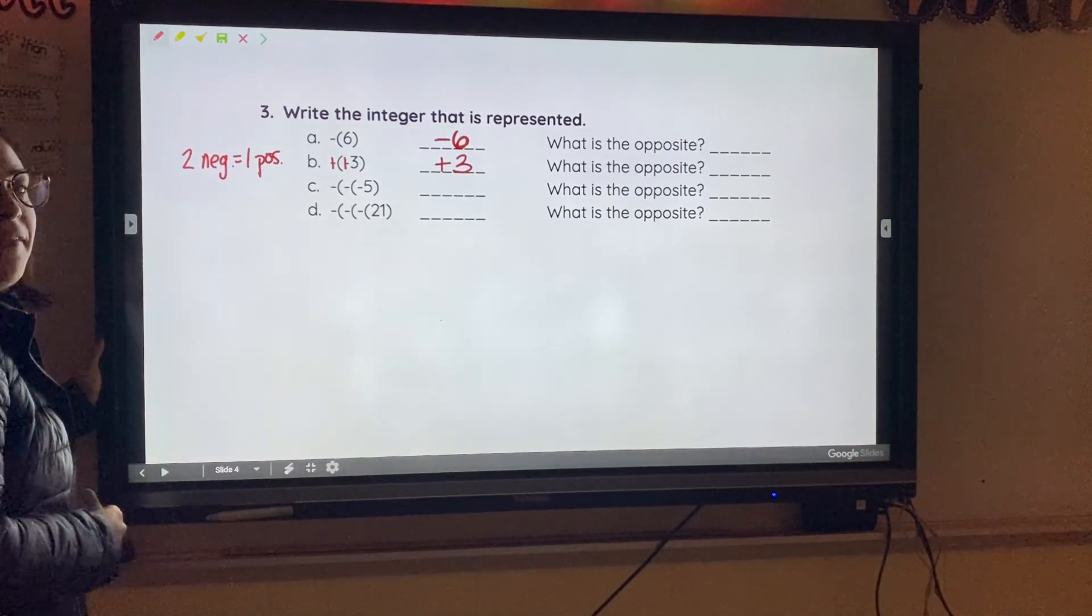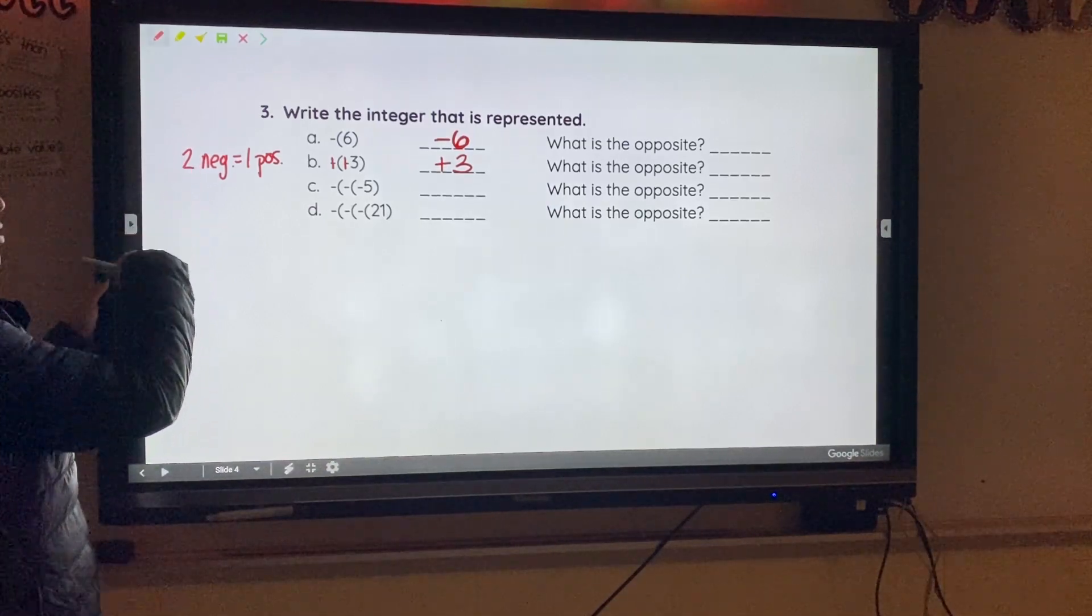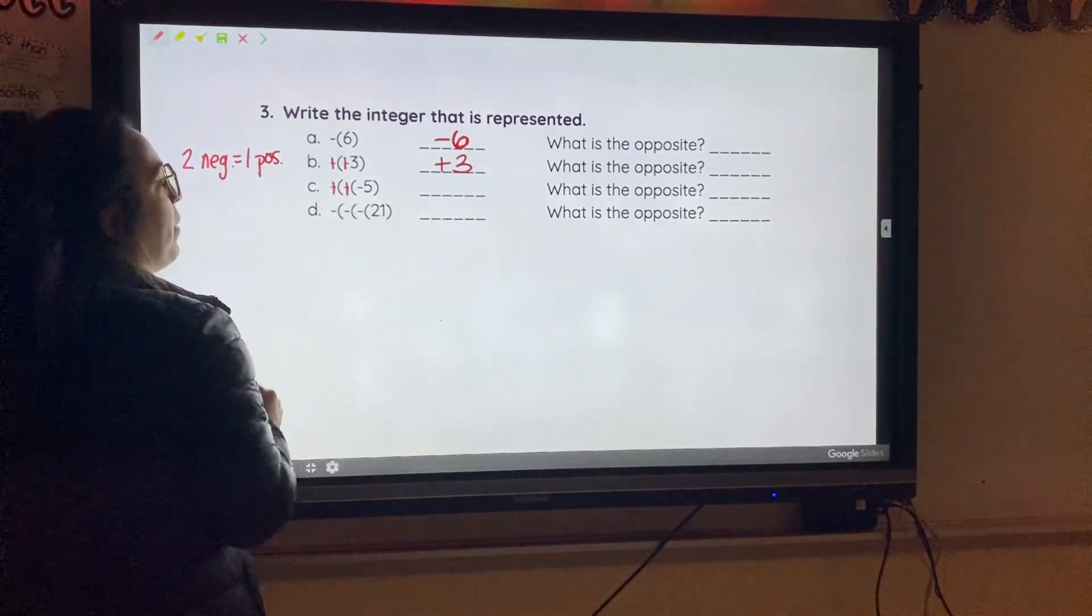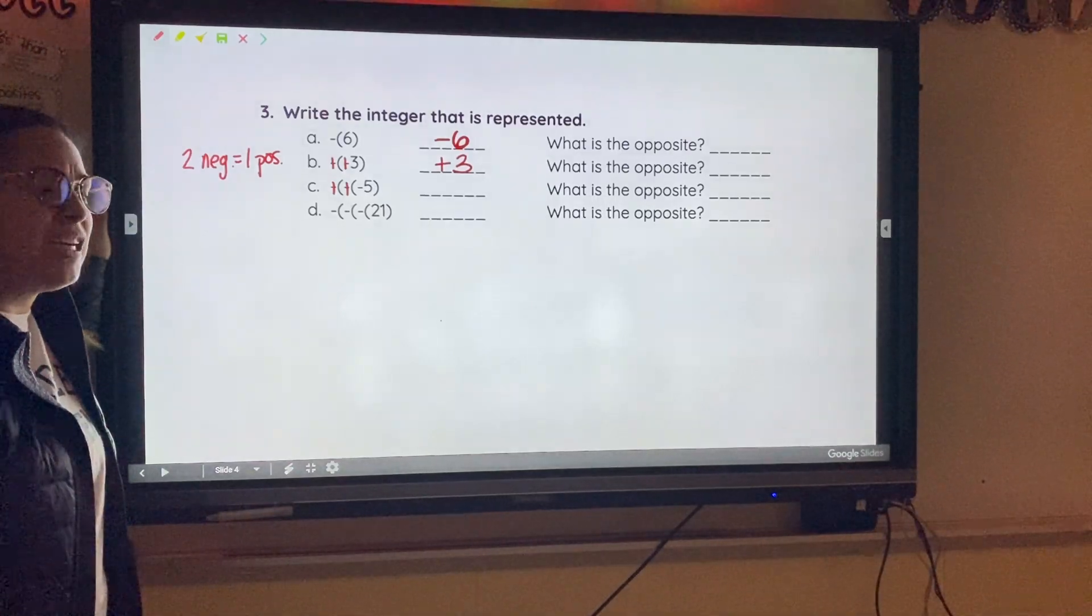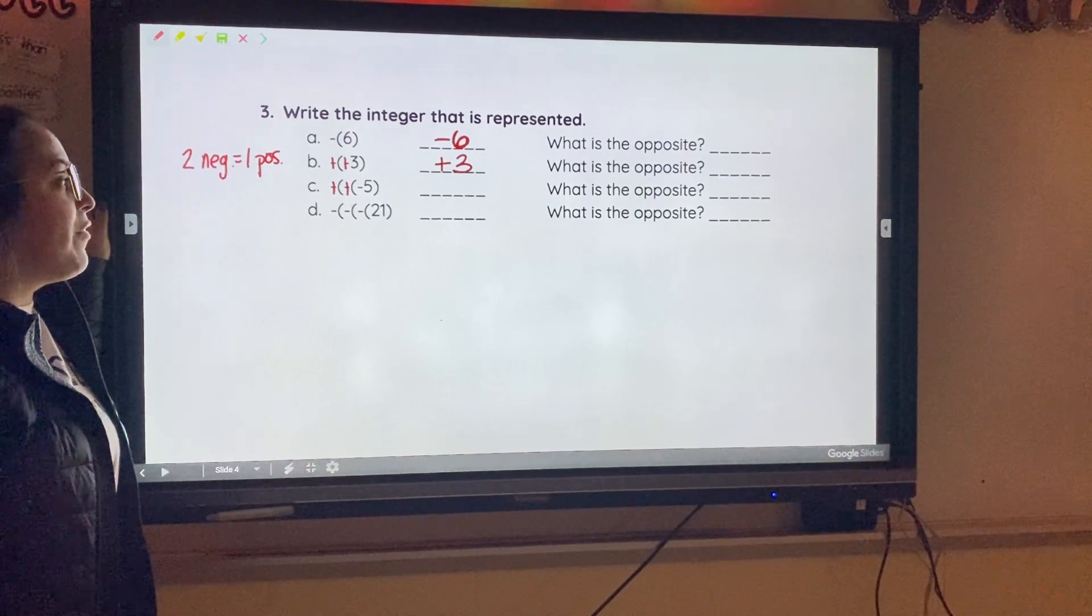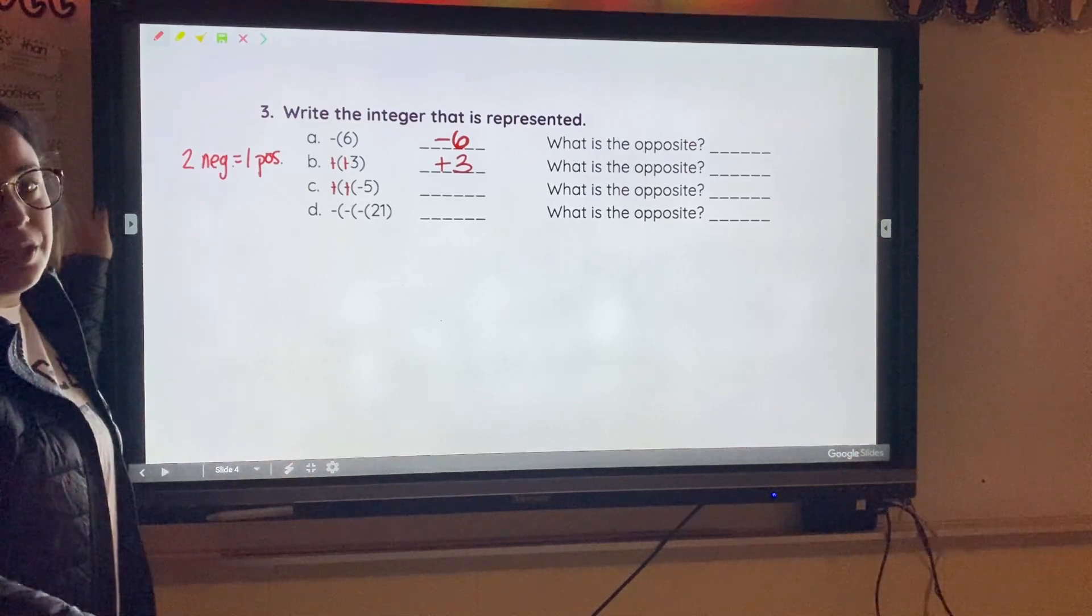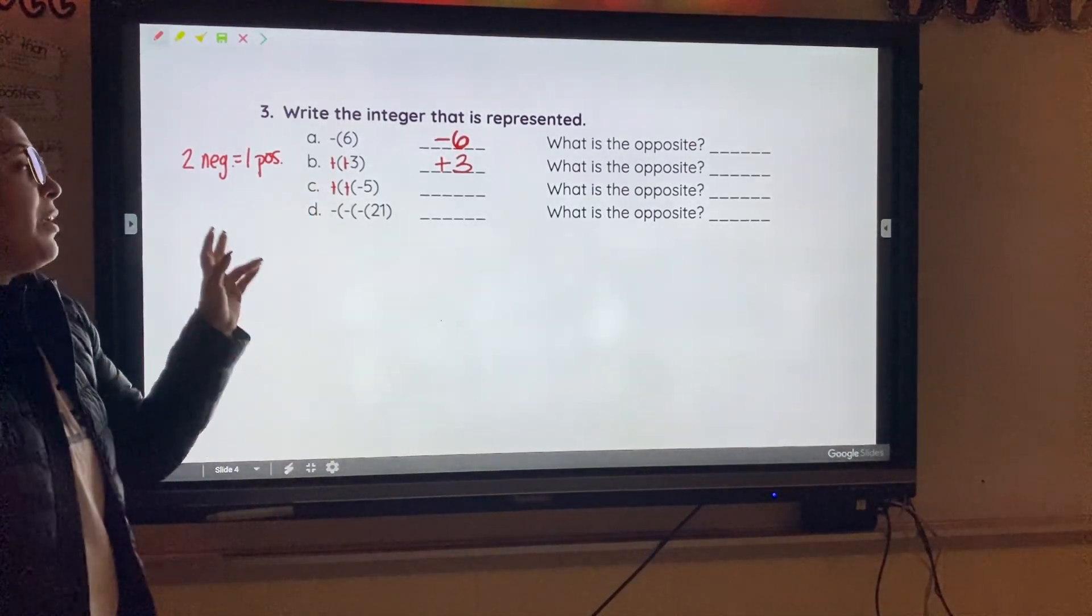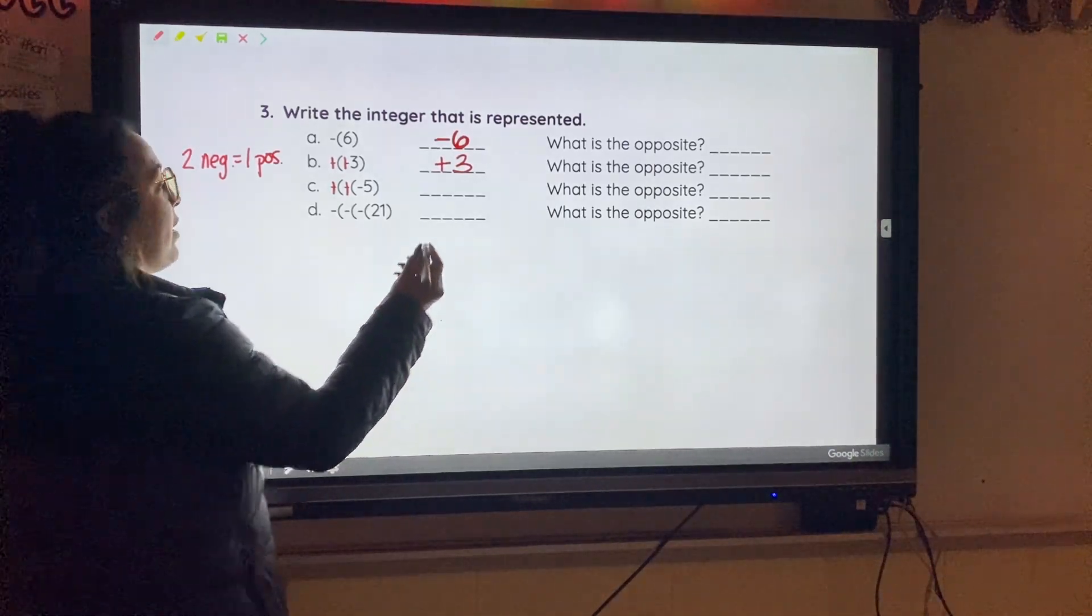But now I have, on C, I have three negatives. Well, like I said, two negatives. I'll put them together. So these two become positive. But then I have another negative in there. Well, if you have a negative by itself just hanging out, your number is going to be negative. After you've crossed them out to make them positives, but you still have one negative left over, your answer is automatically going to be negative.